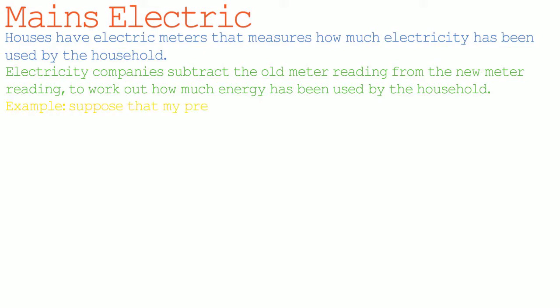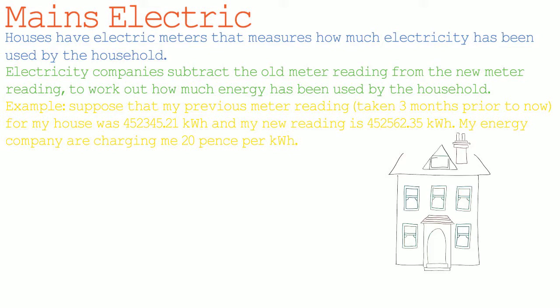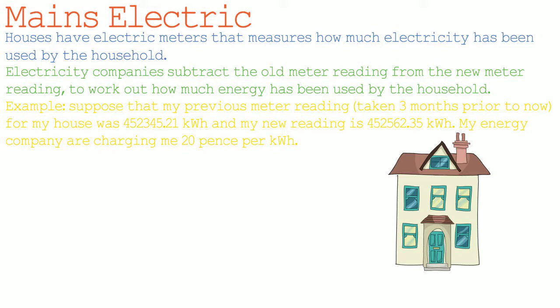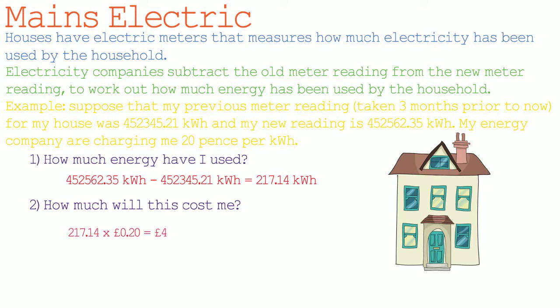Here's an example. Suppose my previous meter reading taken three months ago was 452345.2 kilowatt hours, and my new meter reading is 452562.35 kilowatt hours, and my energy company is charging 20p per kilowatt hour. To find how much energy I have used, we subtract the old reading from the new reading, giving us 217.14 kilowatt hours. To find the cost, we multiply 217.14 units by 20p per unit, which works out to £43.43.